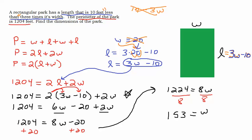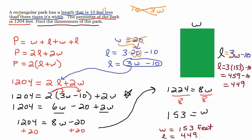So we need to make sure we've answered the question. The question is to find the dimensions of the park. So we need to find the length and the width. We've got the width here. The width is 153 feet and you should always label your answers. And now we need to find the length. We know the length is 3 times the width. So it's 3 times 153 and then 10 less than that. So what's 3 times 153? 459? I think that's right. 459 take away 10 is 449. So I'm going to say that the length is 449 feet. And that is my answer.